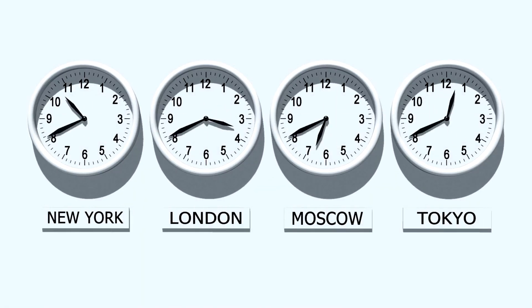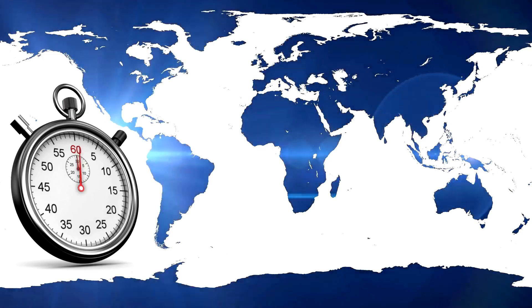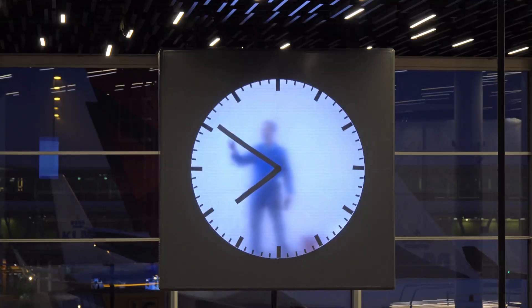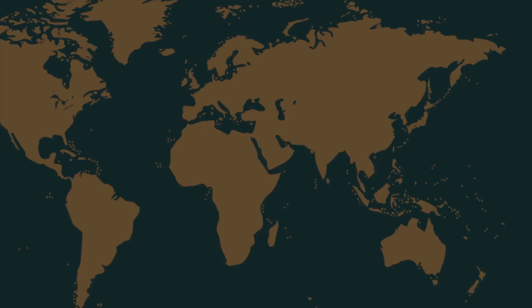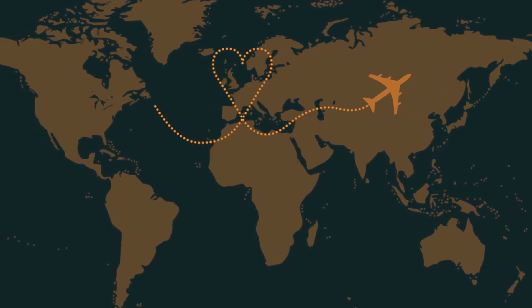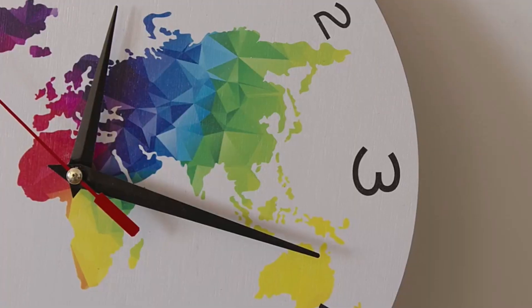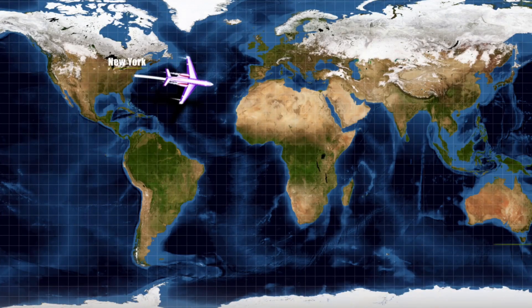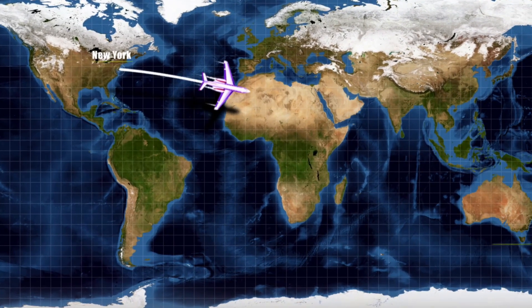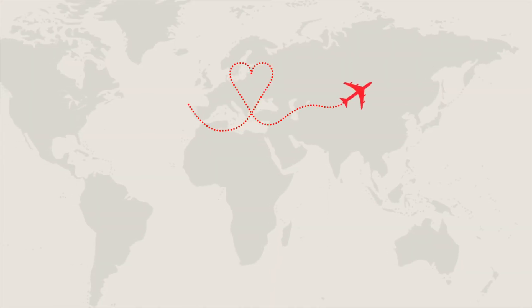Why do we need the International Date Line? Imagine what would happen without it — people could travel around the world and arrive back home on the same day they left, even if they were gone for a week. The International Date Line prevents this kind of temporal chaos, ensuring that everyone on Earth agrees on what day it is. If you cross the date line traveling eastward, you subtract a day; if you cross it traveling westward, you add a day.